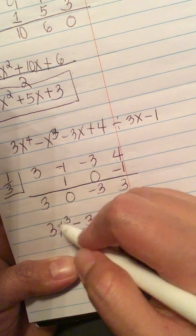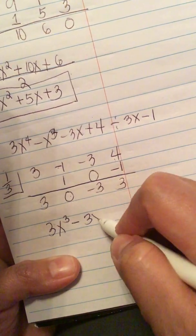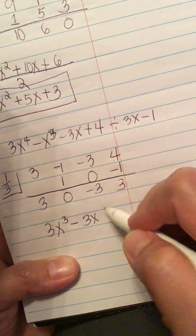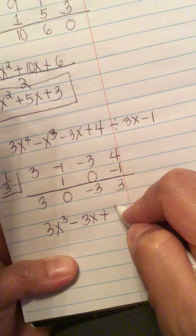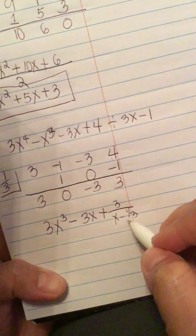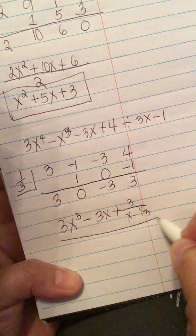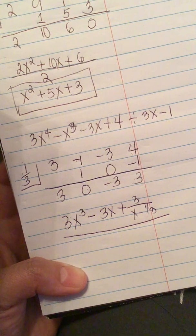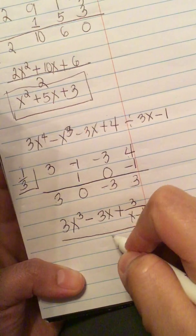So now we reduce this polynomial to 3x cubed minus 3x. And then we have this remainder plus 3 over x minus 1 third. And then we have everything divided by the denominator factor. So this is all over 3.